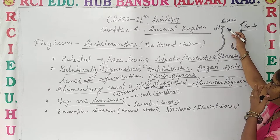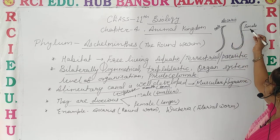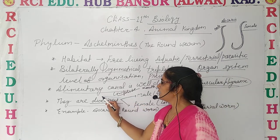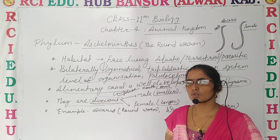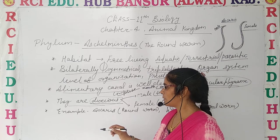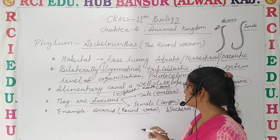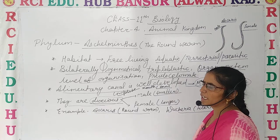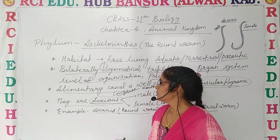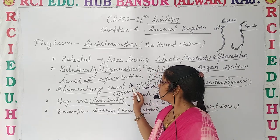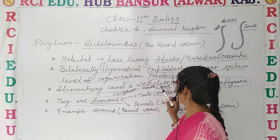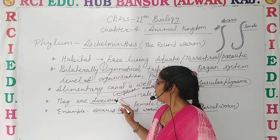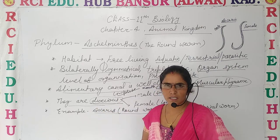In Ascaris, the male is small in size but the female is longer. These are dioecious, meaning male and female sex organs are separable. Examples include Ascaris, also known as roundworm, and Wuchereria, known as filarial worm. The peculiar features of Aschelminthes are the muscular pharynx development and the dioecious nature.